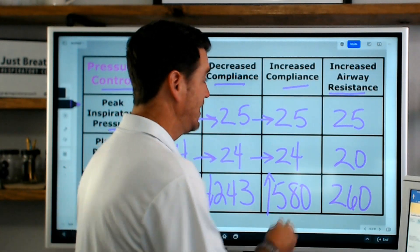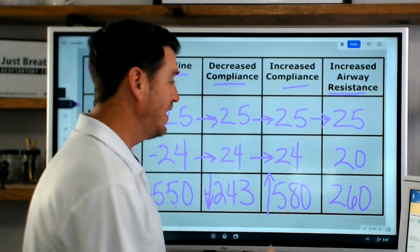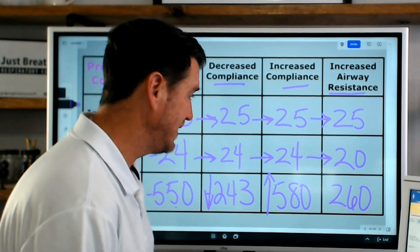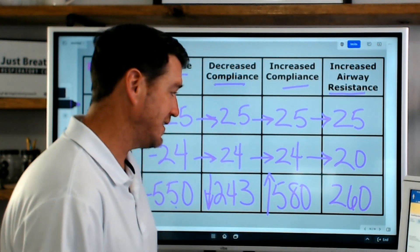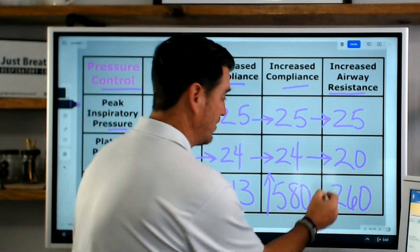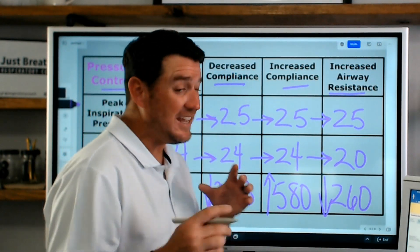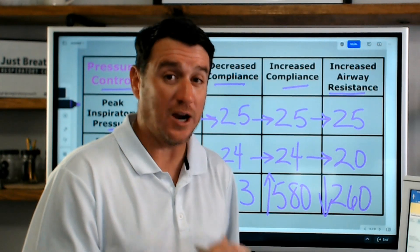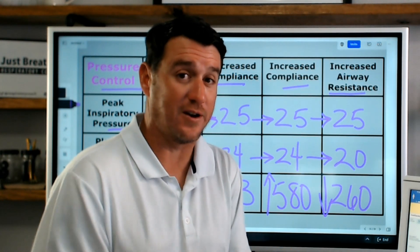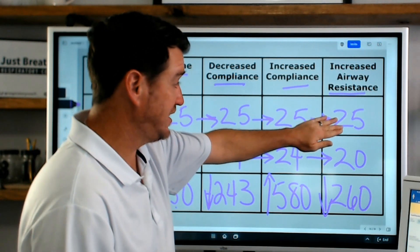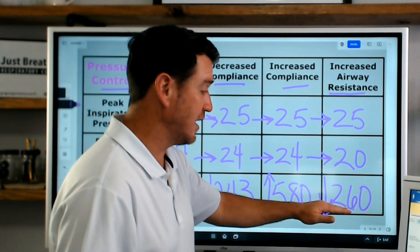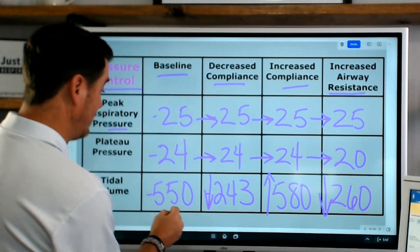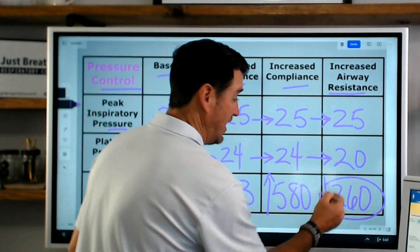We increased the airway resistance. Our peak inspiratory pressure stayed at 25. We did get a little dip in our plateau pressure, which was kind of odd - I'll be diving into that to figure out why, because I wasn't expecting that to happen. But look at our tidal volume - way down. We're seeing that airway resistance has a big effect on the variable. In pressure control, the pressure is set, but it had a major impact on our volumes delivered - we got a small tidal volume compared to baseline where we were getting 550, basically cut in half.